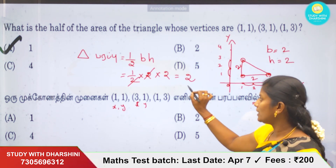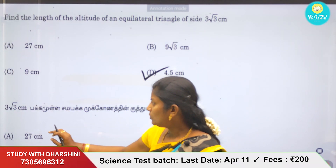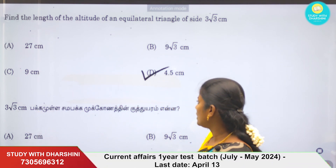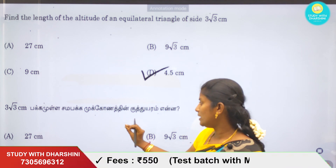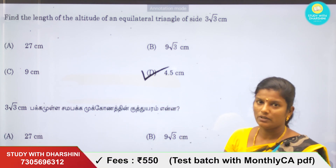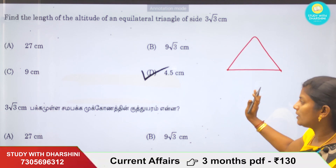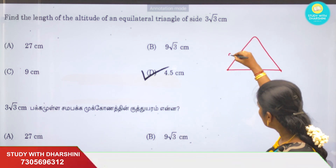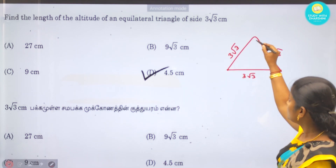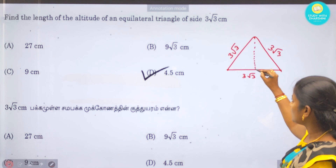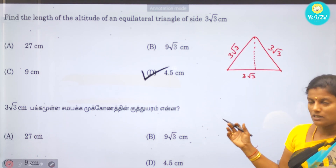So the answer is 2, which means option 1 is the answer. Now for question 3, we have an equilateral triangle with all sides equal to 3√3. We can solve this triangle using the altitude in English. We will use the altitude separately.